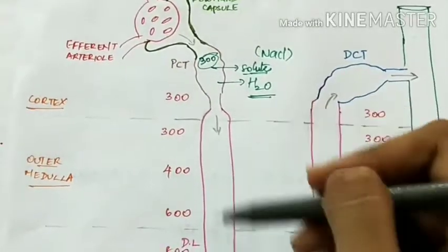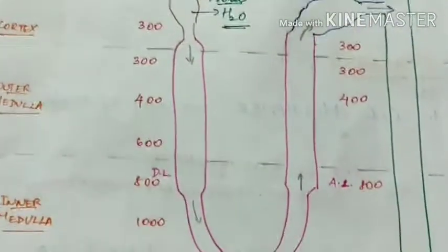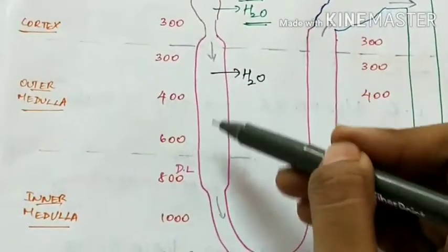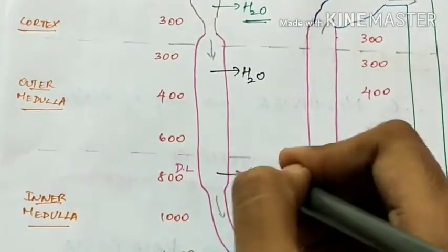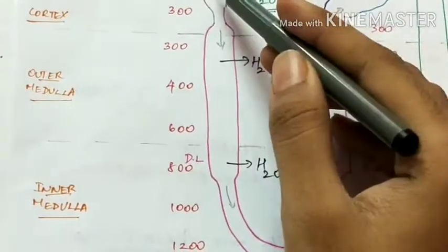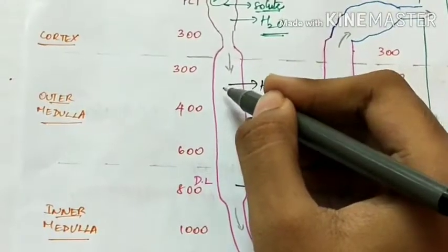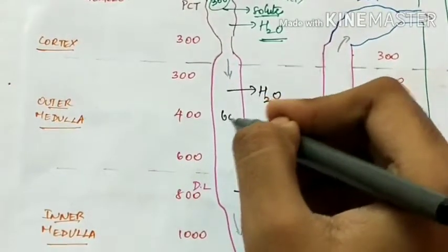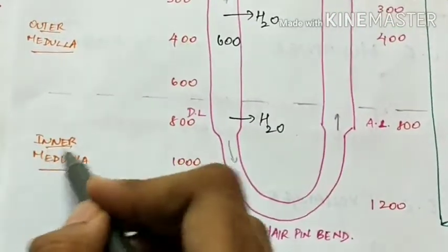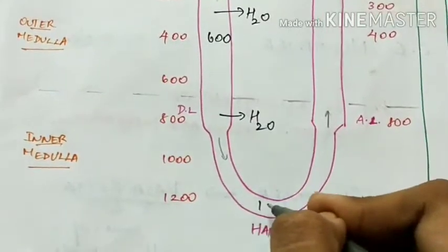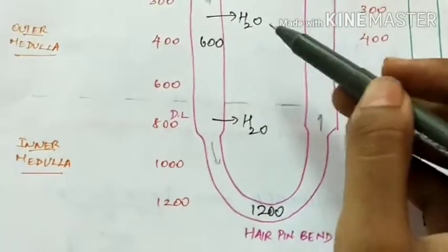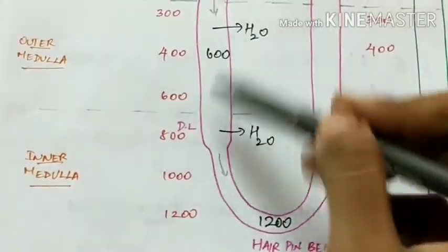In the descending limb of the loop of Henle, there is reabsorption of water, as it is permeable to water but impermeable to solutes. So only water is reabsorbed. Therefore, the osmolarity keeps on increasing to 600 milliosmoles, and finally at the hairpin bend in the inner medulla, the osmolarity becomes around 1200 milliosmoles — equivalent to the medullary interstitium. As only water is reabsorbed, the urine becomes more concentrated here.